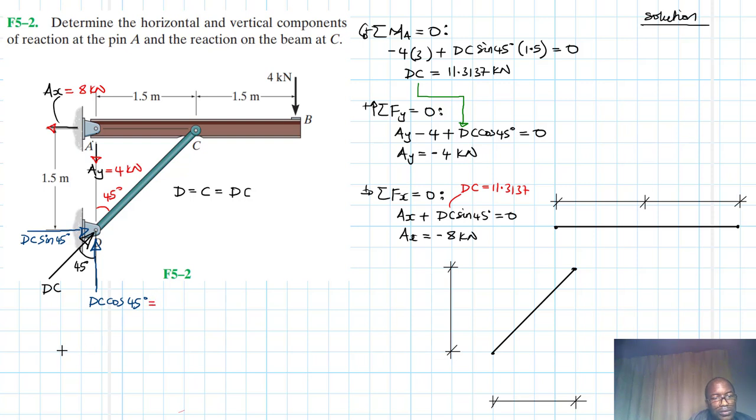This one is equal to DC, which is just 11.3137 cos 45. This is equal to 8 kilo newtons. And so is this one here. This one. Let's move it here. We bring it where the space, we say here. We say DC sin 45. This is also equal to 8 kilo newtons.